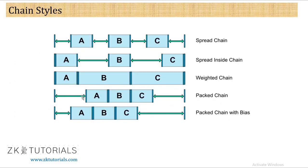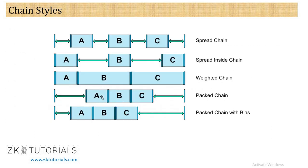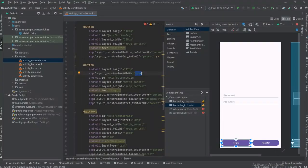Packed chain: the space between views is removed — they are packed together. The views are packed together after margins are accounted for, and you can adjust the whole chain bias by changing the chain's head view bias. Packed chain centers everything, while packed chain with bias means shifting left or right — bias is simply shifting left or right by a custom amount.